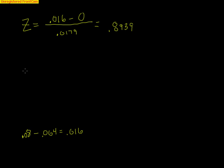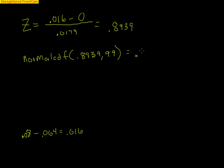To find the p-value, we run a normal CDF on the TI-83 or TI-84. Since the z-score is positive, we calculate from 0.8939 to 99, getting an upper-tail value of 0.1857. Because this is a two-tail test, we multiply by 2, giving a final p-value of 0.3714.